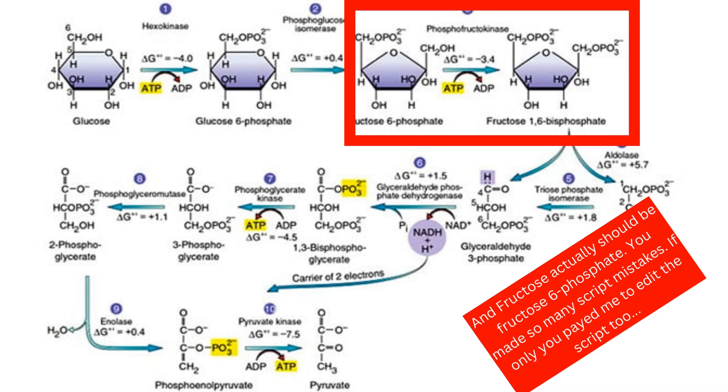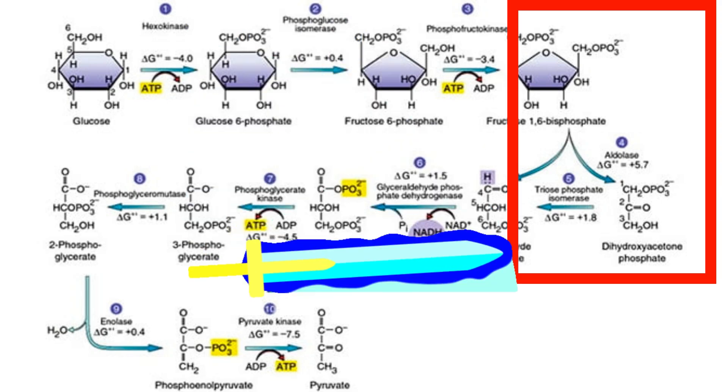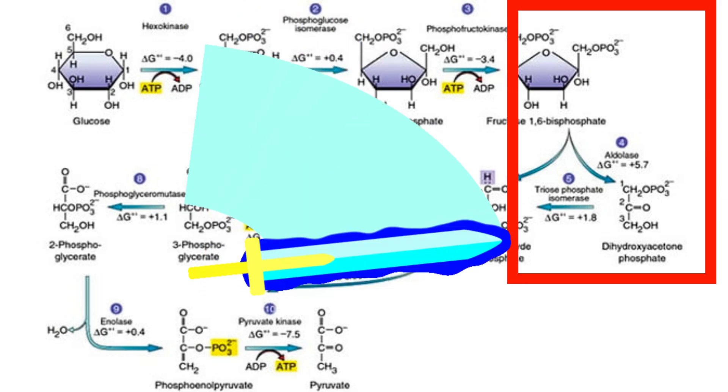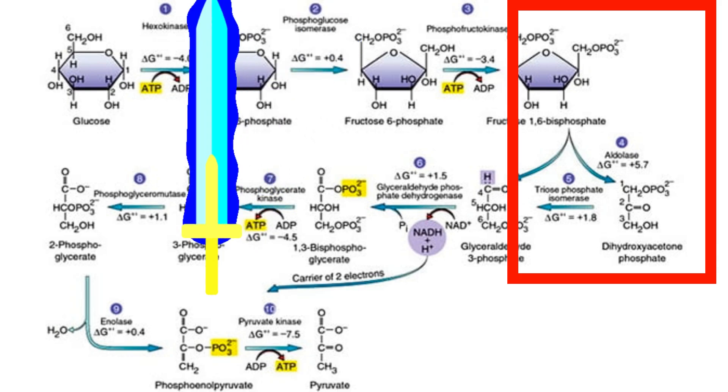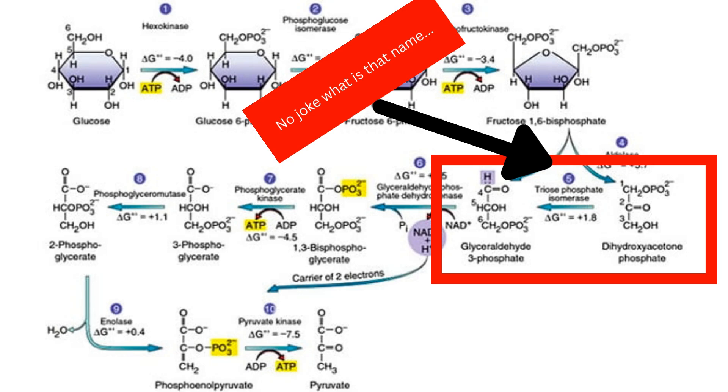Who names these things? Anyways, this molecule is actually cut in half to form two dihydroxyacetone phosphate molecules, which turn into glyceraldehyde-3-phosphate through a magical process known as a very, very long name.